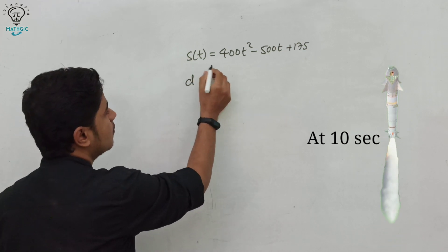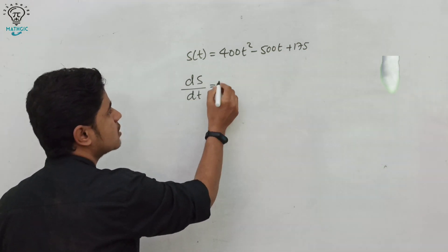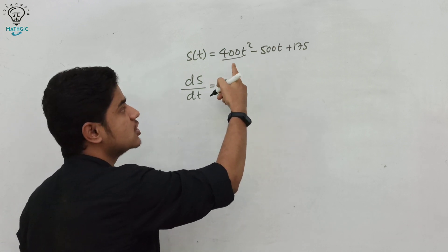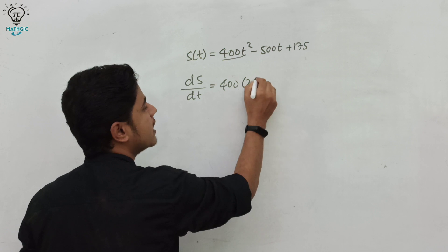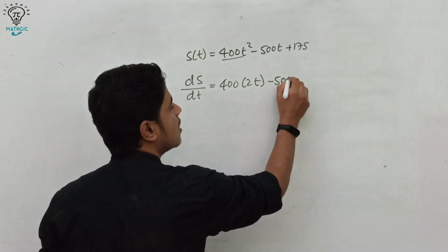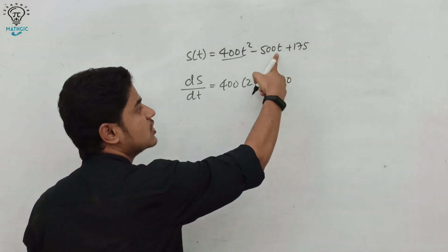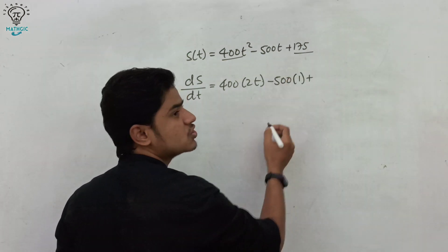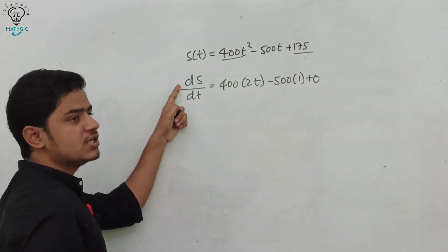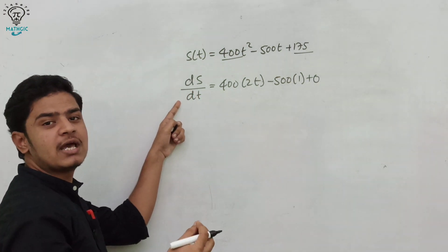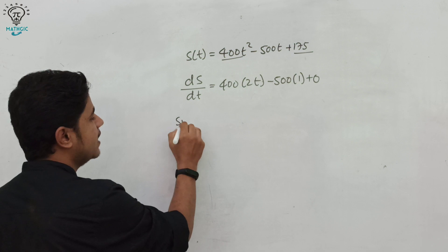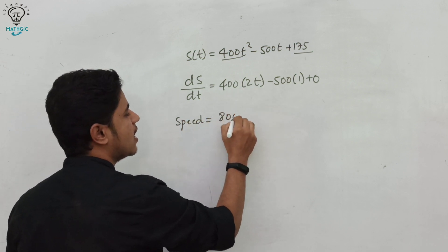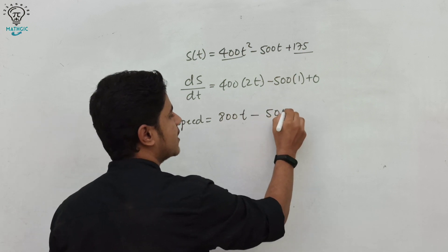Differentiate both sides with respect to t. The derivative of 400t² with respect to t is 400 times 2t, and the constant term is free from differentiation. The difference in distance with respect to time is called speed, so speed equals 800t − 500.